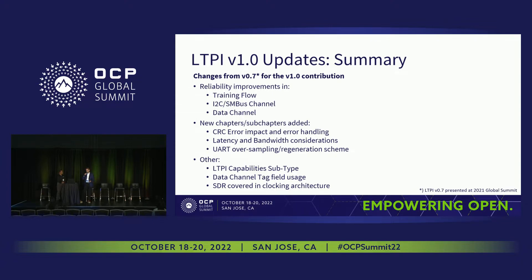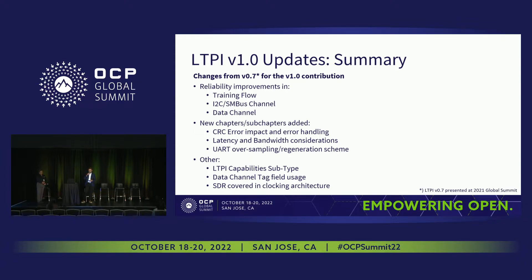On the changes implemented throughout 2021 and 2022 comparing to previous updates: we published version 0.7 of the spec and got a lot of feedback from the community, from the working group within DCSCM, and also through the mailing list that Chen just mentioned. We focused on various aspects of the LTPI specification to apply improvements and implement or define new features that were requested. This is mostly about improving the reliability of this interface, especially within the training flow and the SMBus channels that we applied and extended in the spec.